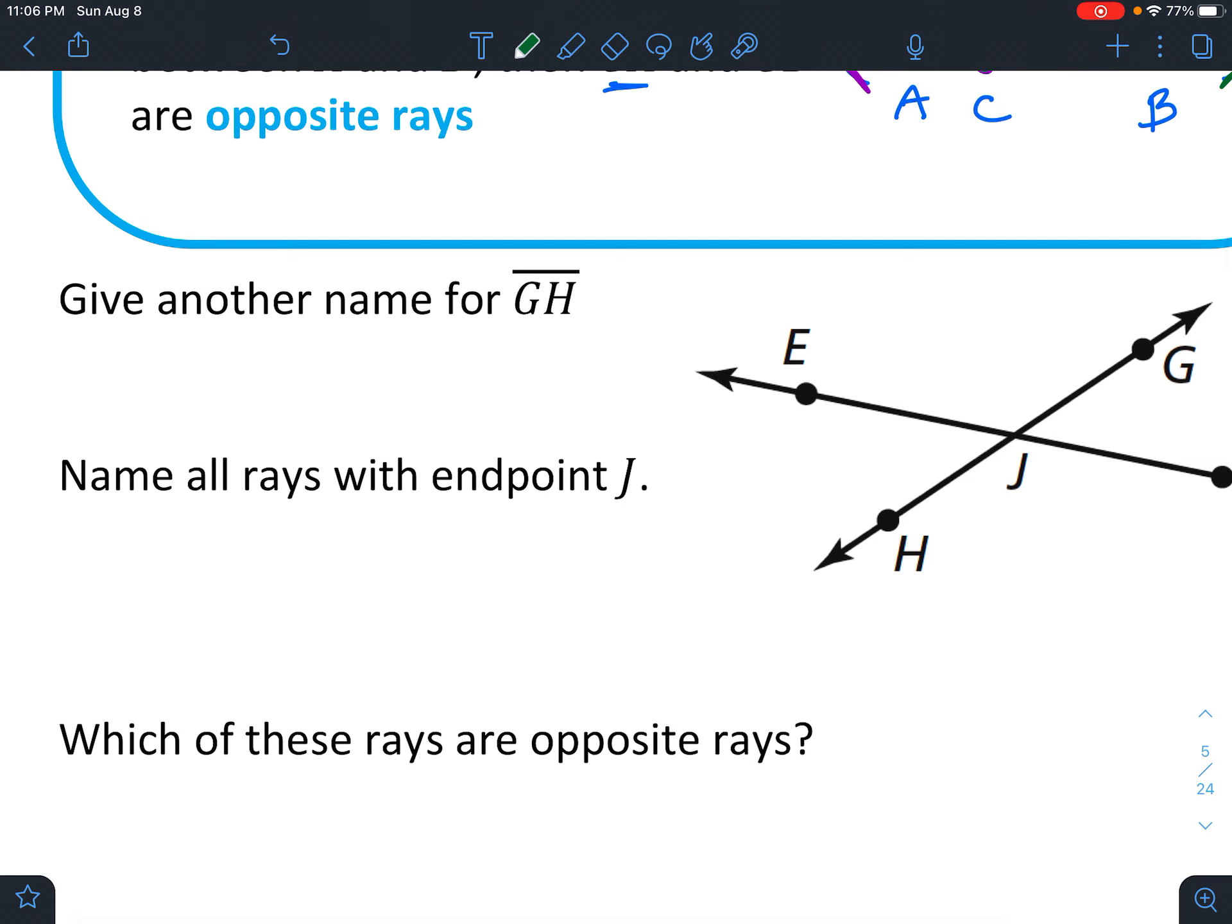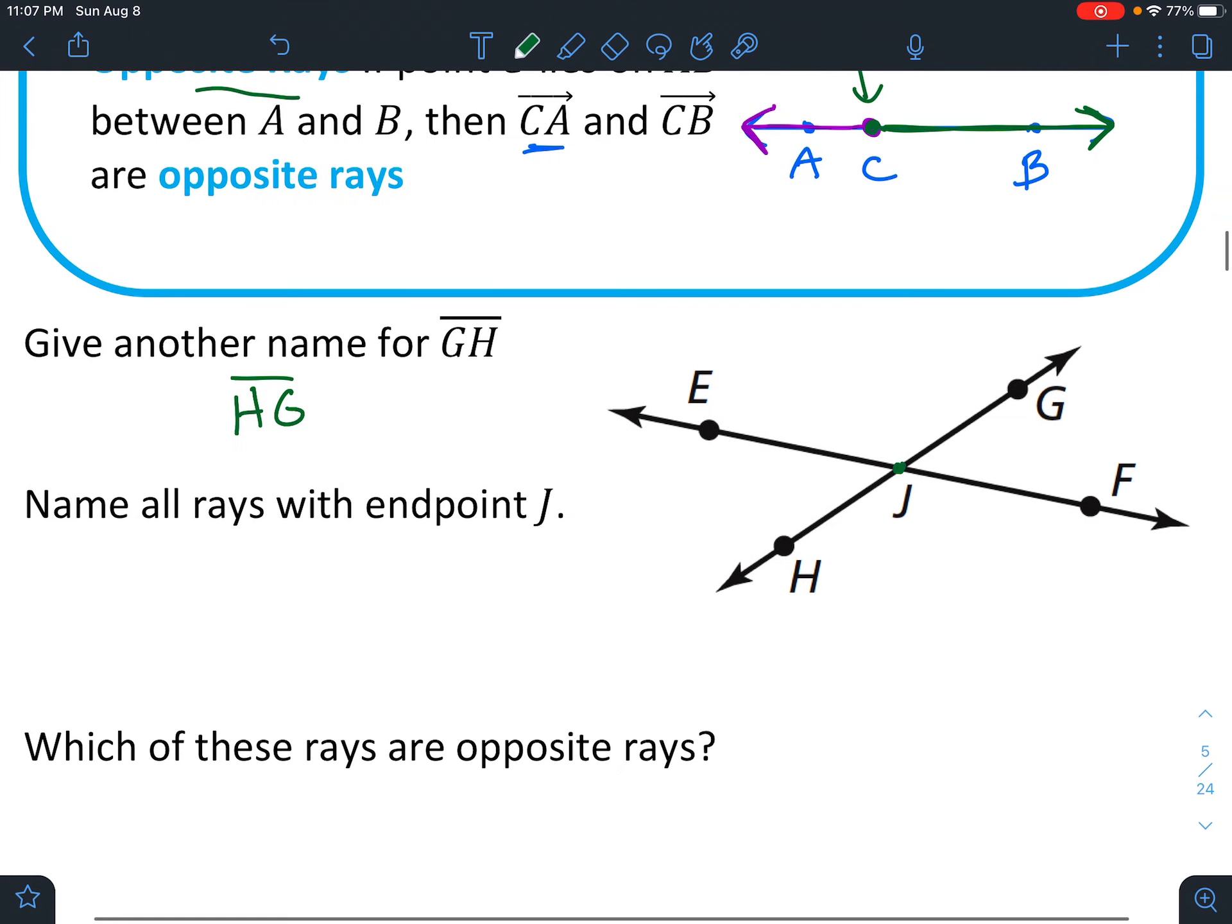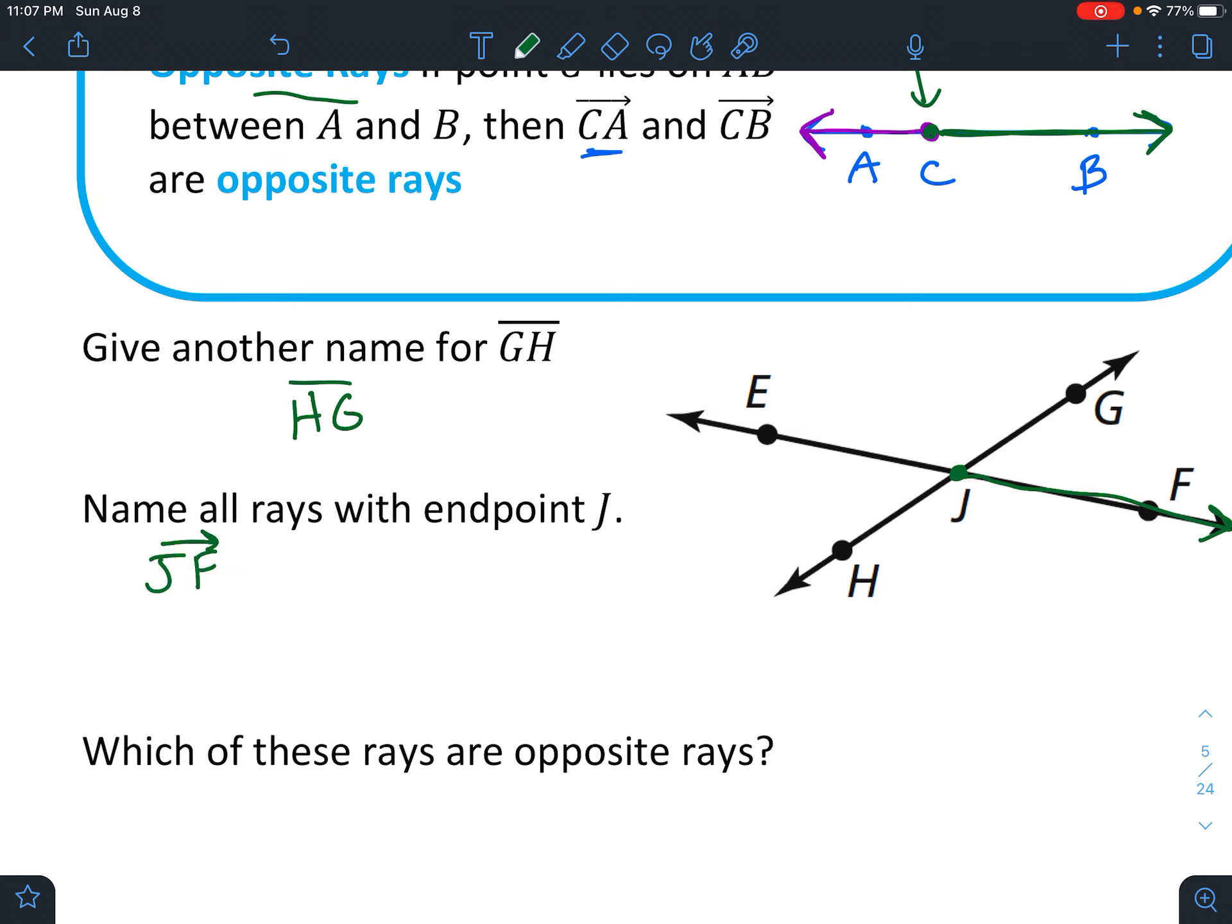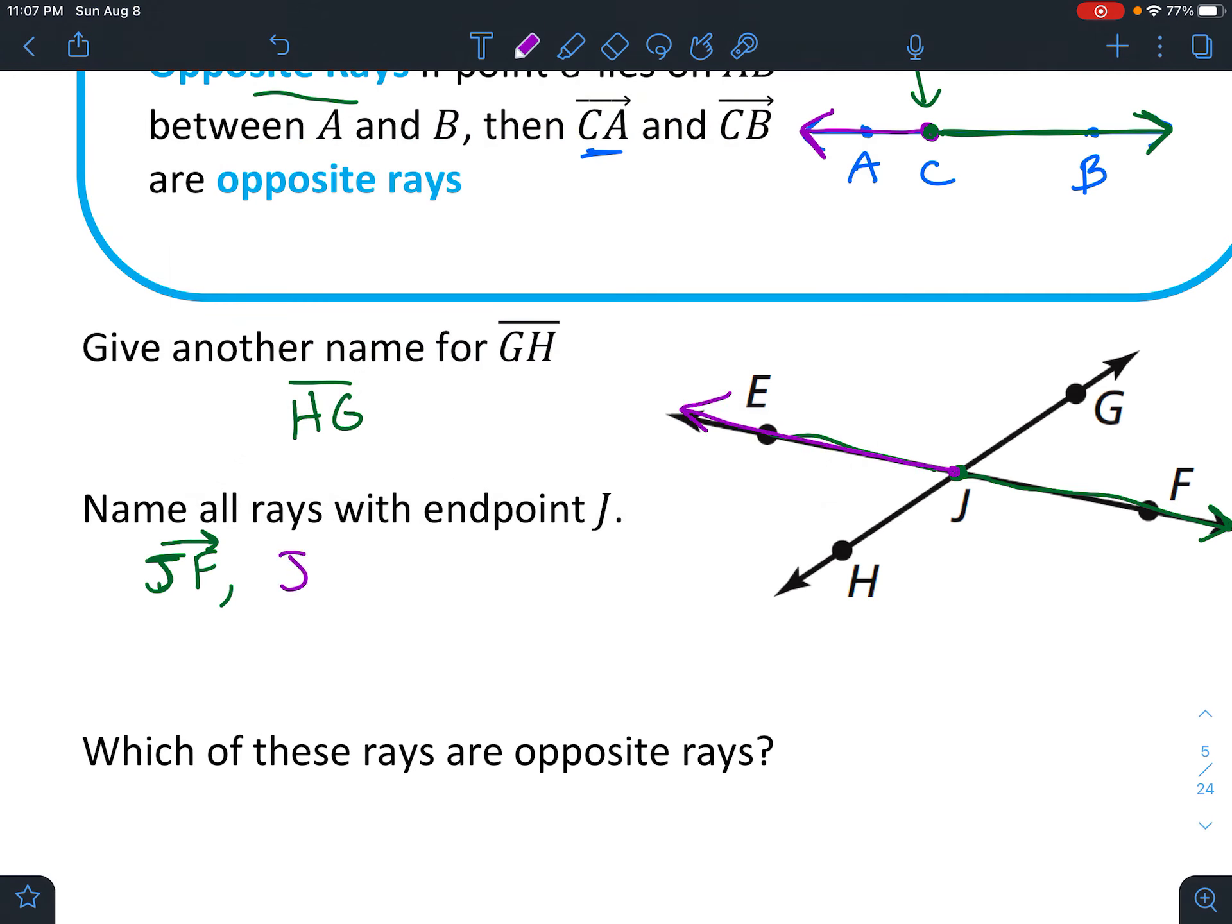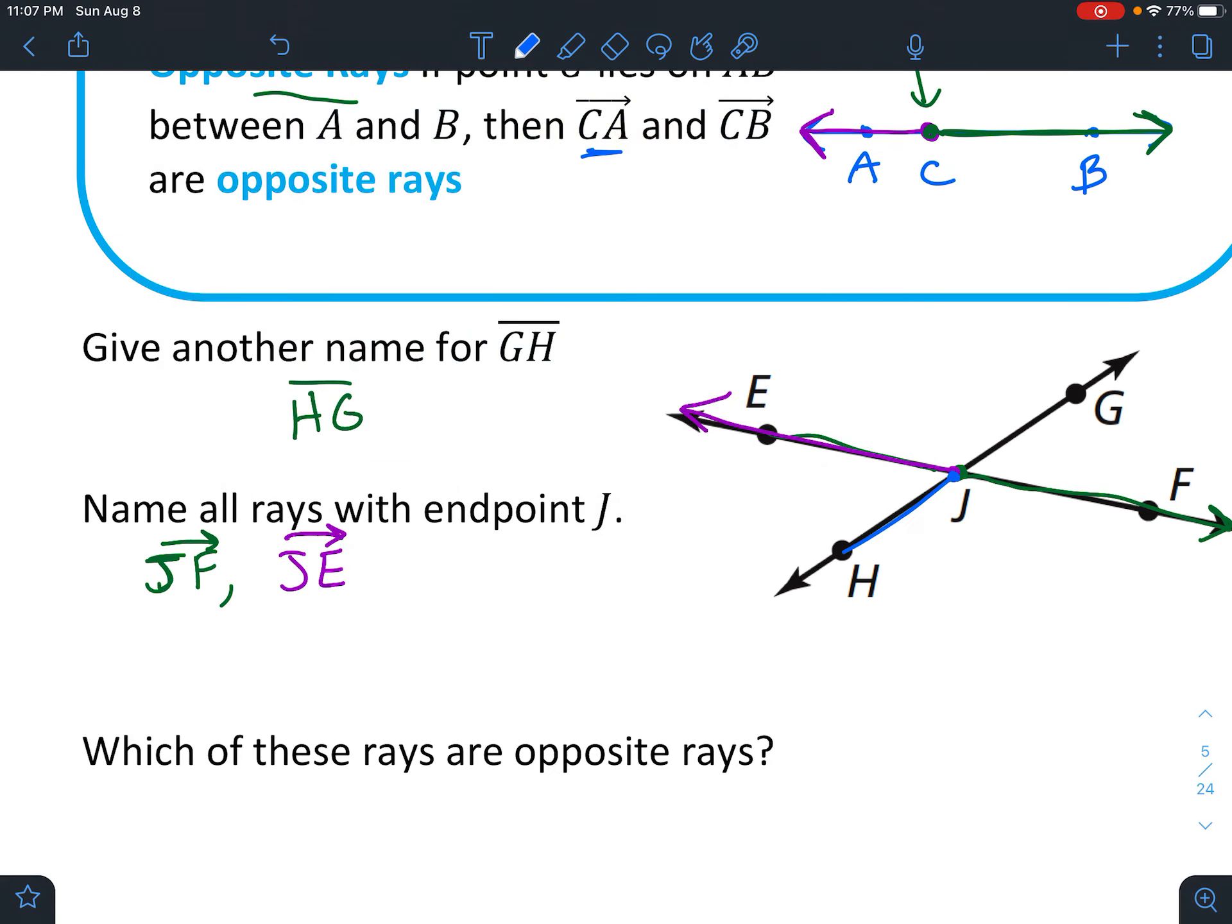Okay, now we're going to go through just a couple of exercises. So I want you to give another name for GH. So GH, you can just flip-flop them and say HG instead. And then name all rays with endpoint J. So endpoint J, or even though it's called endpoint, it's almost like the starting point. You can see it goes off in this direction. So we could say ray JF. And make sure when you draw it, you start with, I don't know if I specified, you want to start with the endpoint as the first letter. And then we could also go the opposite direction, go out like this, and we'd have JE. And we'd also have JH.